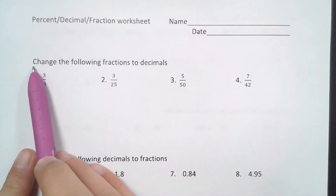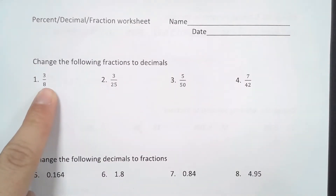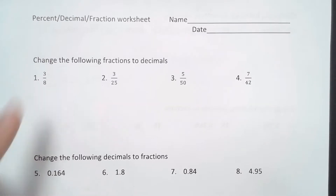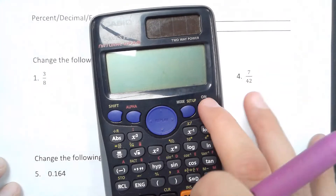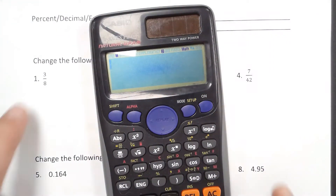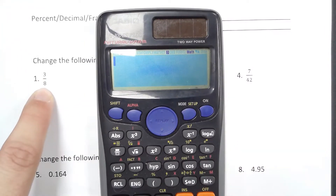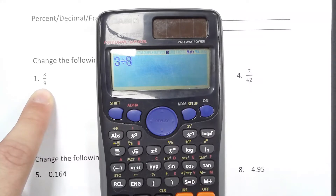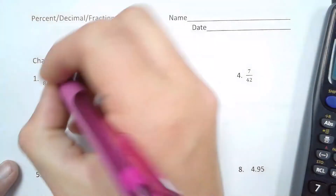The first ones here say to change the following fractions to decimals. When we are converting fractions to decimals, our fraction bar means that we are dividing. Since we are allowed to use calculators here, make sure you have your calculator and are following along. When we change a fraction to a decimal, all we are doing is taking the numerator divided by the denominator. In my calculator, I'll take 3 divided by 8, and I'm just going to write my decimal, which is 0.375.